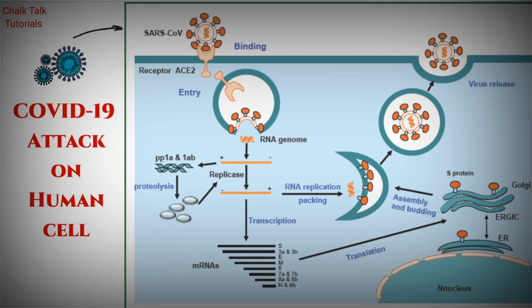After the formation of these new viruses, they need to be released from the cell. They are released by the process known as exocytosis. These newly formed viruses are now ready to infect more human cells and produce more exact copies.